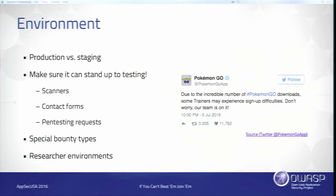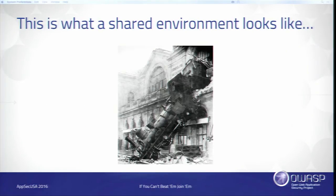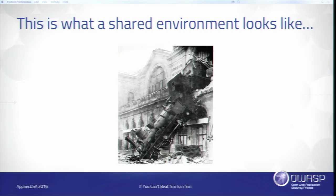Let's talk briefly about researcher environments. A shared researcher environment is generally not great when you have 50 researchers all testing in the same environment — like a CMS or admin portal. Everybody's tripping over each other's payloads, there are endless alert boxes, somebody starts deleting other users. None of this is necessarily nefarious, but it's something to consider when setting up your environment. Segregating accounts for researchers is usually far more beneficial. As soon as a researcher starts running into those issues, it doesn't create a great environment, and we want researchers to have a good environment.